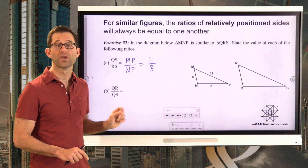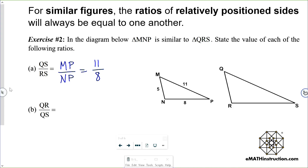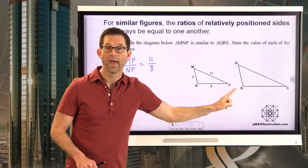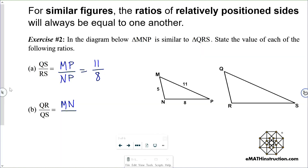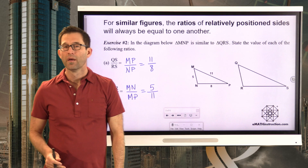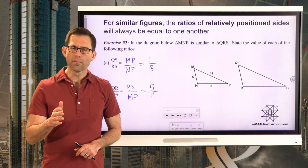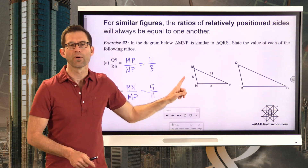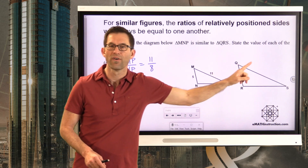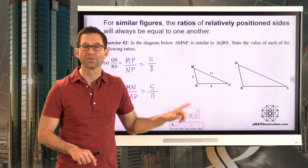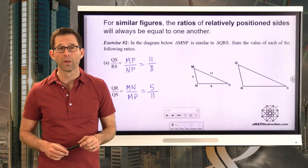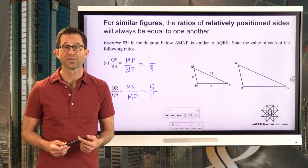QR divided by QS must be equal to MN divided by MP, which is 5/11. This is a very important idea — very similar, no pun intended, to the idea of the ratios of corresponding sides being equal. But here we're making the comparison within the triangles: this side divided by this side must equal this side divided by that side. This gives us a lot of flexibility when setting up problems and solving for missing sides in similar triangles.